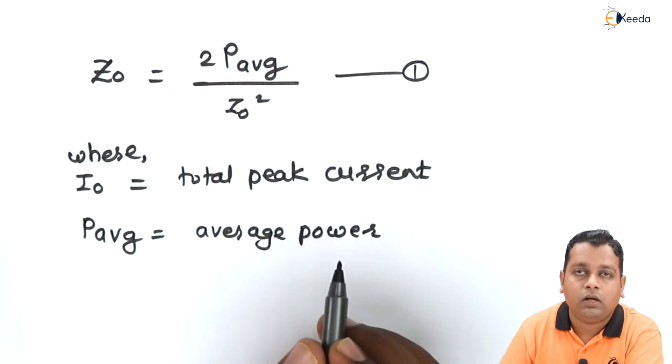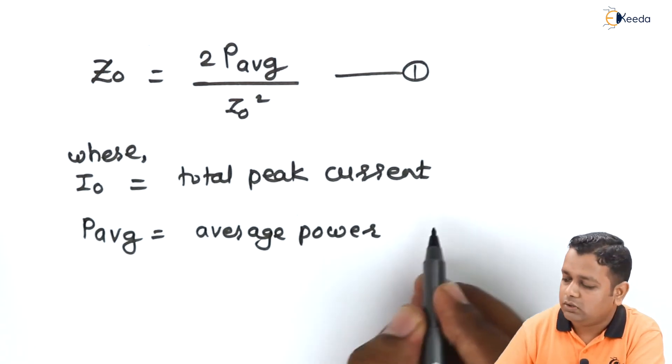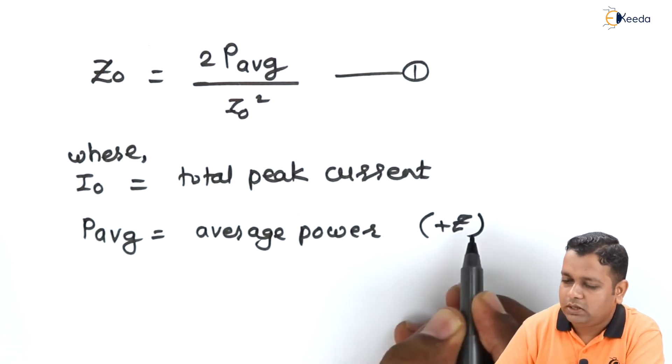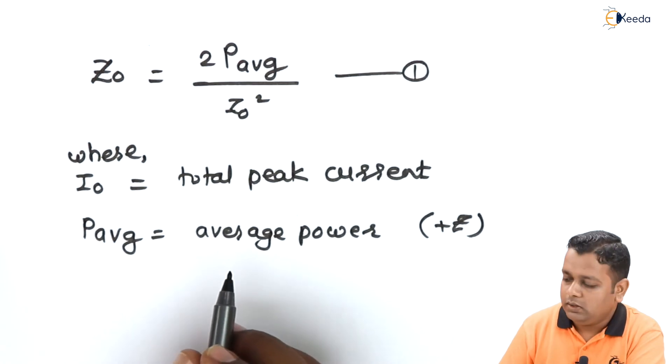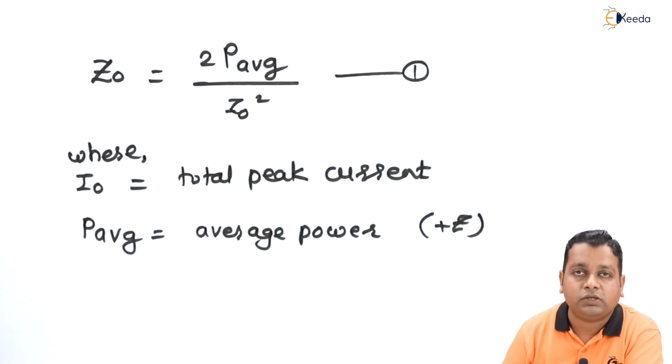This is the average power flowing in the positive direction. So this is the representation of the characteristic impedance Z₀.